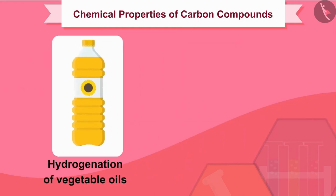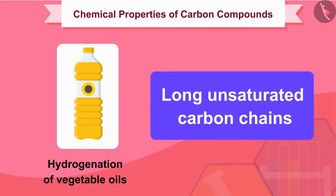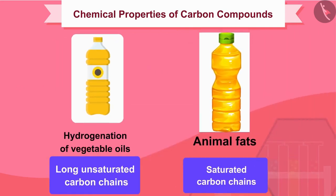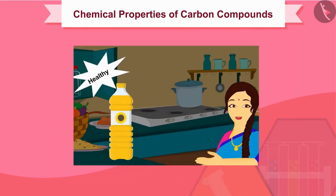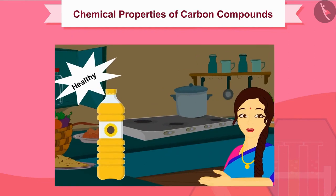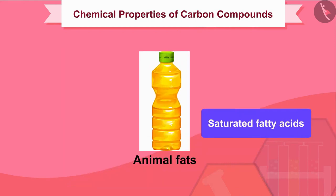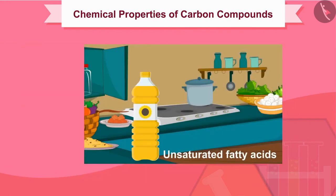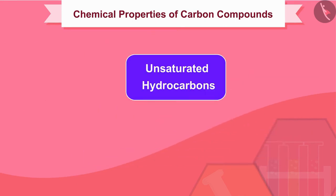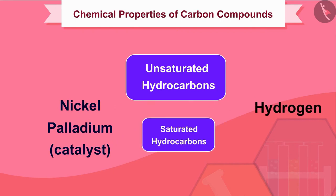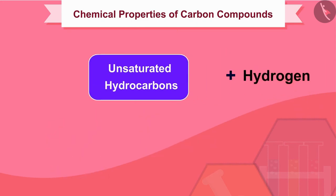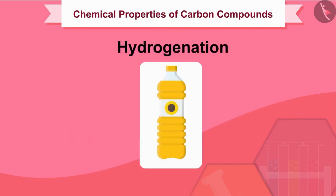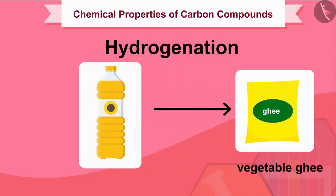This reaction is commonly used in the hydrogenation of vegetable oils using nickel catalysts. Vegetable oils generally have long unsaturated carbon chains while animal fats have saturated carbon chains. Animal fats contain saturated fatty acids which are considered harmful to health, so oils containing unsaturated fatty acids should be chosen for cooking. Unsaturated hydrocarbons add hydrogen in the presence of a catalyst such as nickel or palladium to form saturated hydrocarbons. This hydrogenation is the process used to prepare vegetable ghee from vegetable oils.